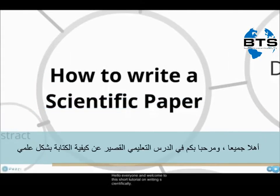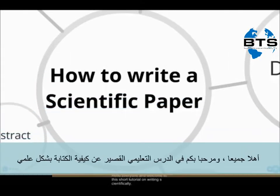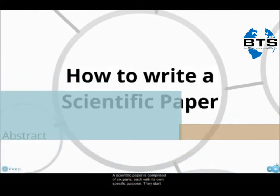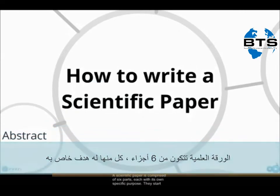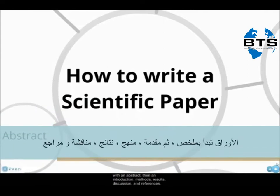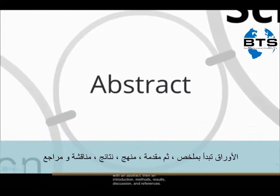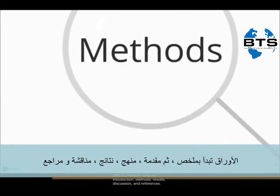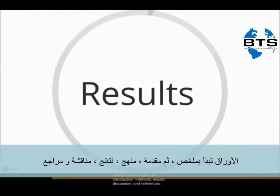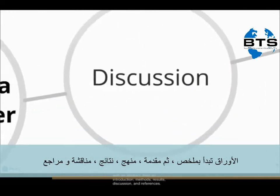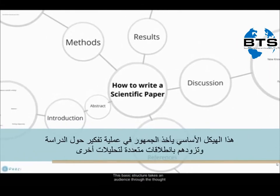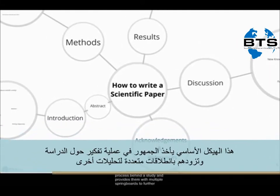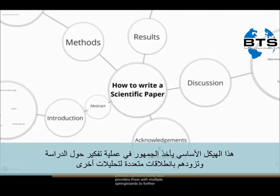Hello everyone and welcome to this short tutorial on writing scientifically. A scientific paper is comprised of six parts, each with its own specific purpose. They start with an abstract, then an introduction, methods, results, discussion, and references. This basic structure takes an audience through the thought process behind a study and provides them with multiple springboards for further investigation.